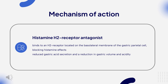Upon release, histamine acts on H2 receptors expressed on the basolateral membrane of parietal cells, leading to increased intracellular cAMP levels and activated proton pumps on parietal cells. The proton pump releases more protons into the stomach, thereby increasing the secretion of acid. In conditions associated with acid hypersecretion, such as ulcers, there is a loss of regulation of acid secretion. Famotidine works on H2 receptors and blocks the actions of histamine.